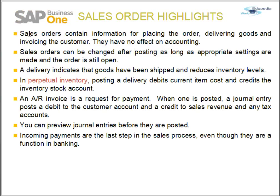Let's look at the highlights of the sales order. The sales order contains information for placing the order, delivering goods, and invoicing the customer. Sales orders can be changed after posting as long as the appropriate settings are in place. Perpetual inventory provides a highly detailed view of changes in inventory and allows real-time reporting of the amount of inventory in stock, accurately reflecting the level of goods on hand.